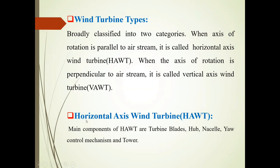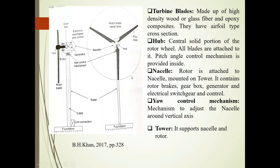The main components of HAWT are turbine blades, hub, nacelle, air control mechanism, and tower. See in the diagram — the parts of this HAWT are shown: turbine blades, hub, nacelle, air control mechanism, and tower.